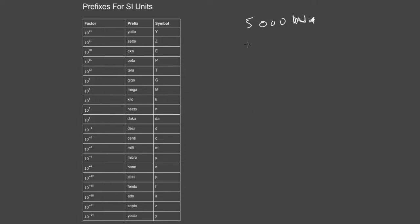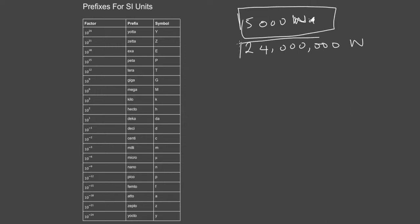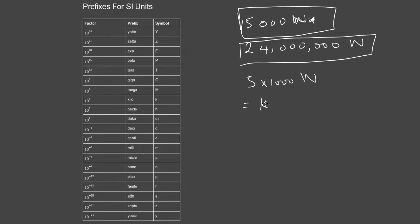To make life easier in physics, we shorten these values. Instead of writing 5,000 watts (5 with 3 zeros), we write it as 5 × 1,000 watts, which can be written as 5 kilowatts (5kW). The k is a prefix — k stands for kilo, which is 10 raised to the power of 3.